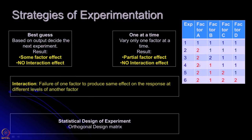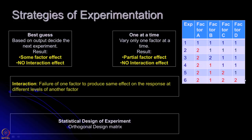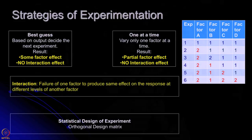Now with A fixed at level 2 and B at level 1, I conduct experiments varying factor C. I find that factor C at level 2 gives the best result, so I fix C at level 2. Likewise I conduct experiments with A, B, C fixed at levels 2, 1, and 2 respectively, varying factor D, and find the combination that gives the best result. This is called the one-factor-at-a-time method. It gives partial factor effects — better than best guess — but again it gives no interaction effect.